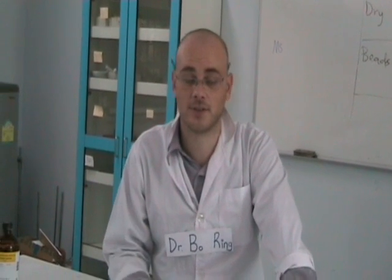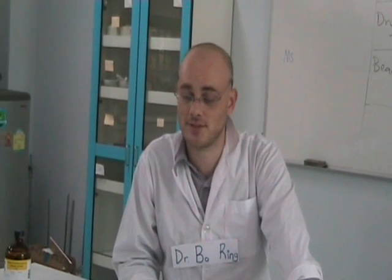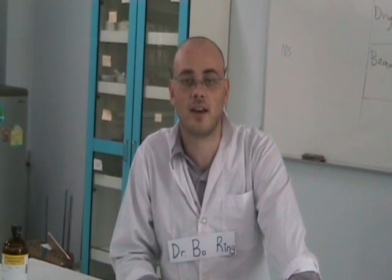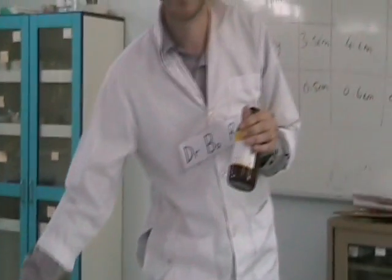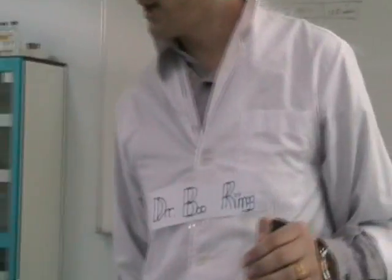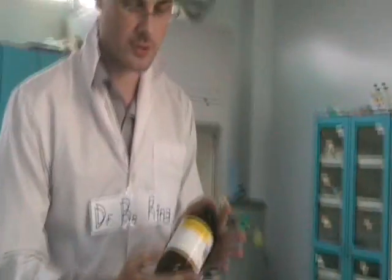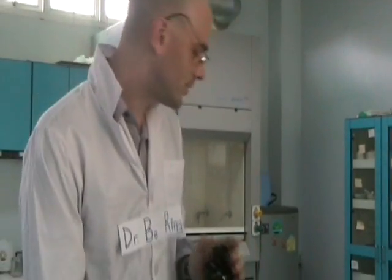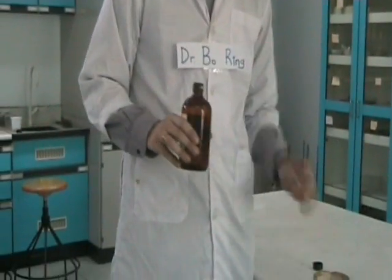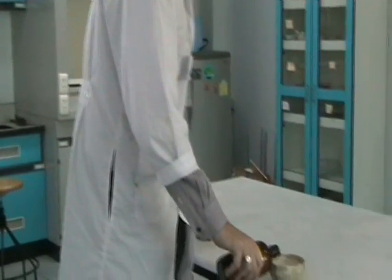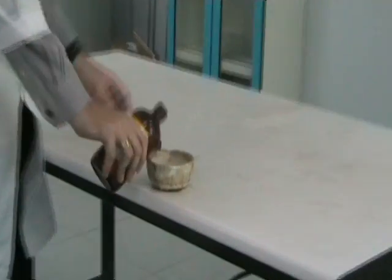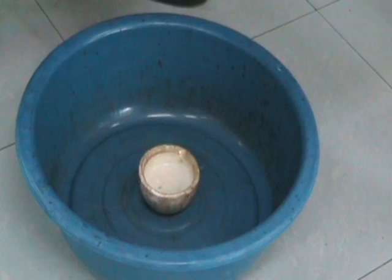Good evening boys and girls. My name is Dr. Bo Ring and today I'm going to show you a very exciting chemical reaction. Please follow me as I walk over to my special chemical area where I will place some hydrogen peroxide into this crucible. When I place the hydrogen peroxide into the crucible, it will immediately begin to break down into hydrogen and oxygen. The reaction happens instantaneously but takes a long time. Look at that. Isn't that very exciting, children?